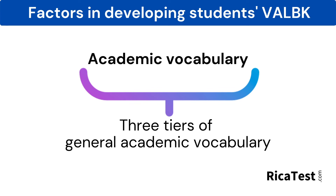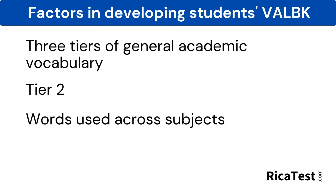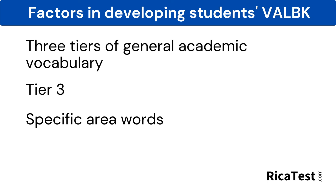Vocabulary includes academic language, and within academic language there are three tiers. Tier one includes simple words used in everyday language, such as tree, run, and park. Tier two words increase in difficulty yet are still used across subjects — these might include keyboard, sight, and evaluate. Tier three words are the most challenging, used only for one specific area of study. Example tier three words include constitution, respiratory, or antagonist.